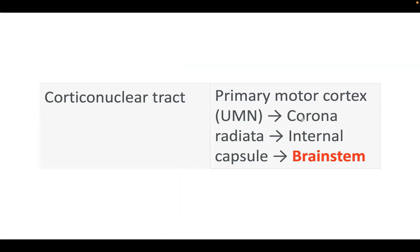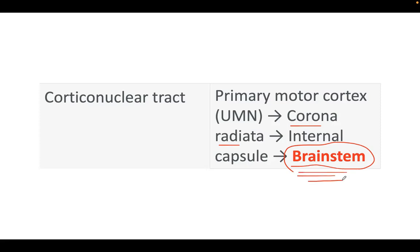Now, for exam preparation, remember the pathway: starting from the primary motor cortex — the upper motor neuron — then through the corona radiata, then the internal capsule, until it reaches the brainstem. The main difference between the corticospinal tract and the corticobulbar or corticonuclear tract is where it ends: the corticonuclear tract ends in the brainstem.